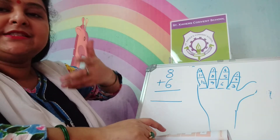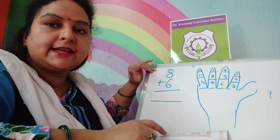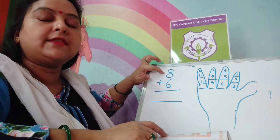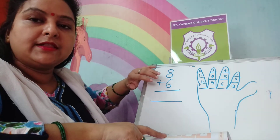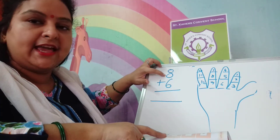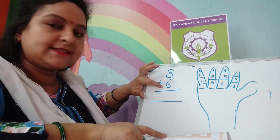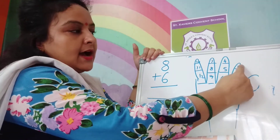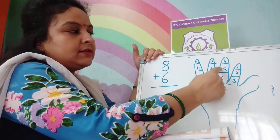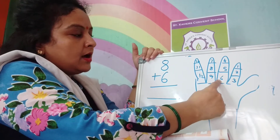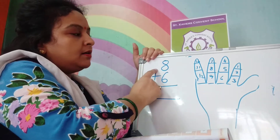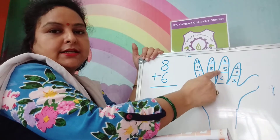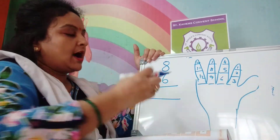You will take the bigger number. The bigger number is 8 and the smaller number is 6. You will keep the bigger number 8 in your mind and then count forward by the smaller number. After 8, the next number is 9 — so: 9, 10, 11, 12, 13, 14. You have to count up to 6. So the answer will be 14.